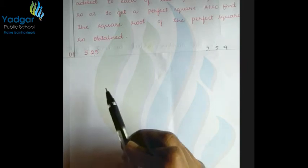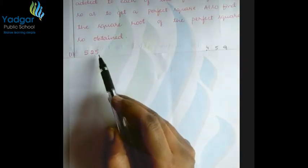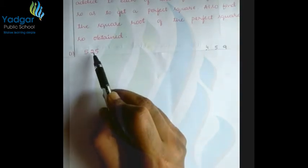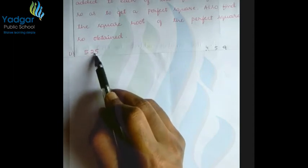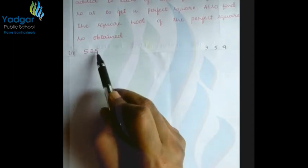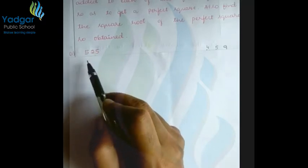Now, let's solve a few problems based on this topic. First problem: 525. Since 525 has three digits, you have to solve this by using the division method.